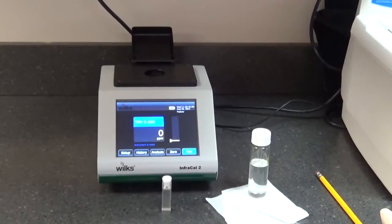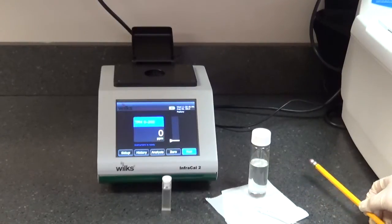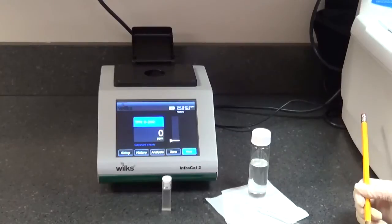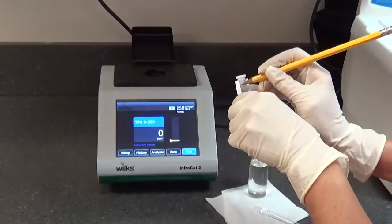For measurements below 2 ppm, it is important to use the same cuvette for zeroing and sample testing. It is also required to re-zero prior to each sample. The cuvette must always be oriented in the same direction. Mark the frosted side of the cuvette as an orientation reference.